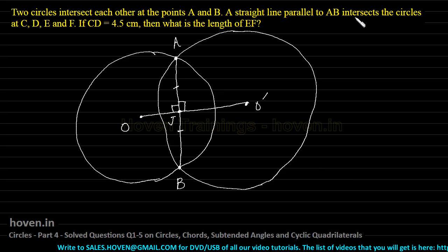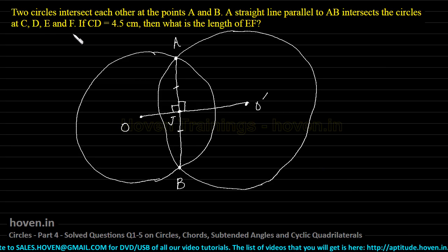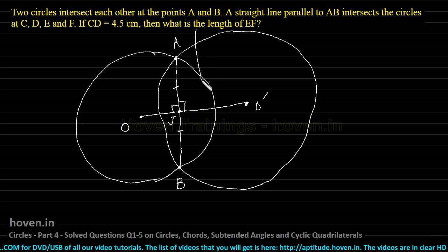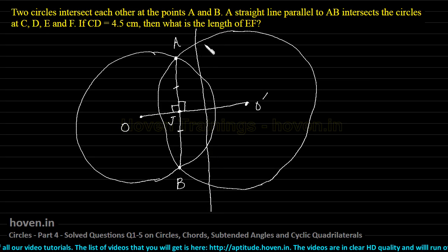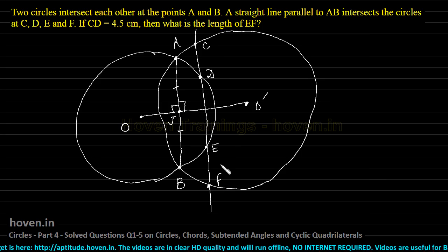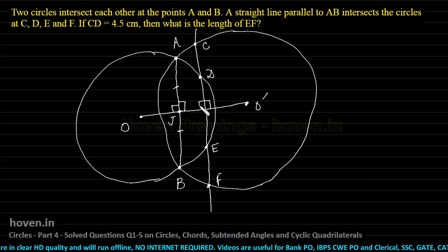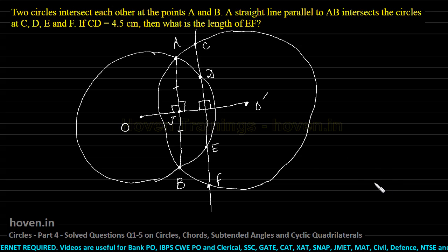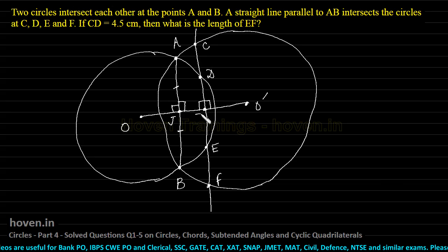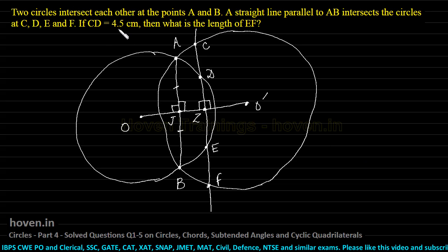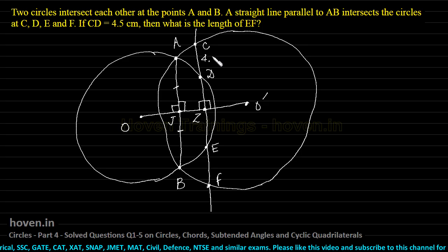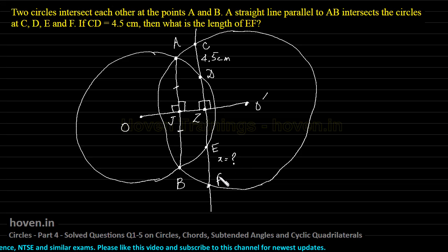A straight line parallel to AB intersects the circles at C, D, E, and F. Let us draw that straight line — it is cutting the circles at C, D, E, and F. This line is parallel to AB; therefore, since OJ is perpendicular to AB and this line is parallel to AB, it is also perpendicular to OO dash. Let us mark this intersection point as Z. The question says if CD is 4.5, what is the length of EF?